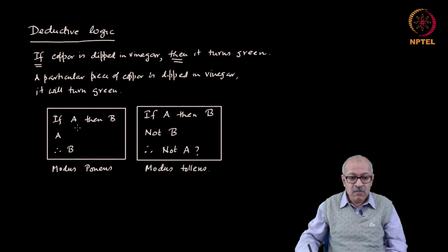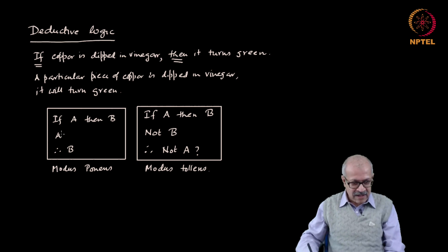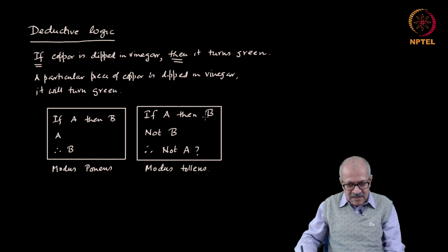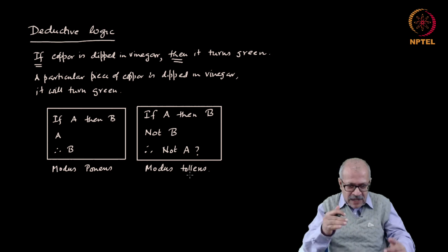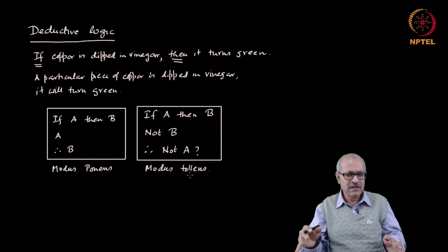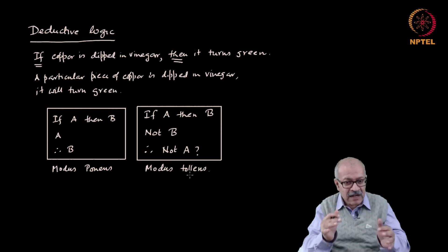Modus tollens applied to another situation: if an animal is an insect, it has six legs. I have an animal which is an insect, and therefore it will have six legs — true, modus ponens. Now not-B: I have counted the legs and found that it does not have six legs, therefore we conclude that it is not an insect — it can be a horse. That is a valid reasoning called modus tollens. So we have learned two basic valid structures permissible in deductive logic.